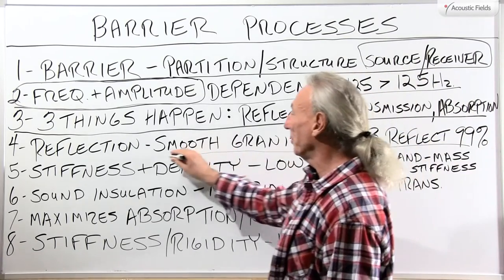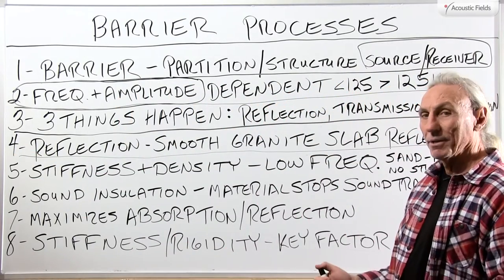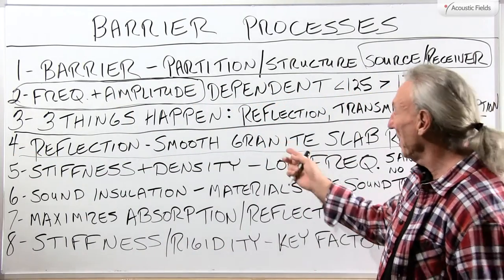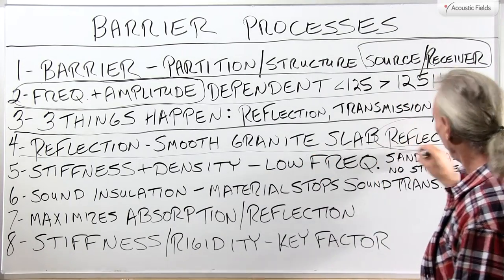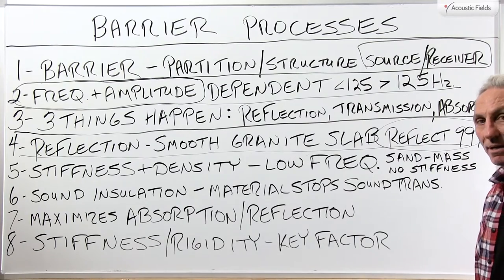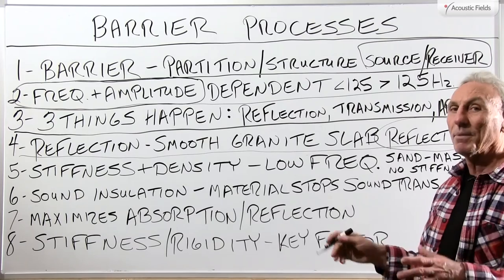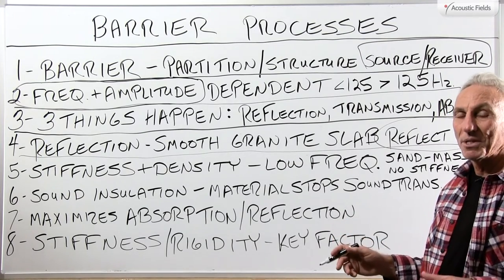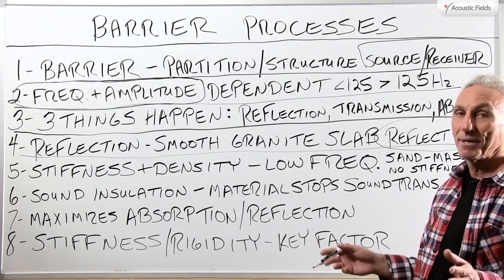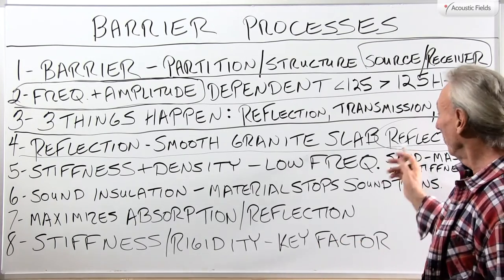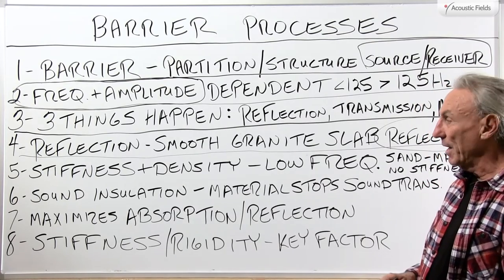Let's get a feel through example of what some of this barrier technology is about. Let's take granite — a granite slab. A granite slab will reflect 99% of the energy that strikes it. That's why barriers that must stop low-frequency energies have huge mass and huge densities, and granite is very, very heavy. A granite slab will reflect 99% of the energy going against it.